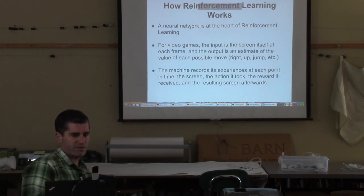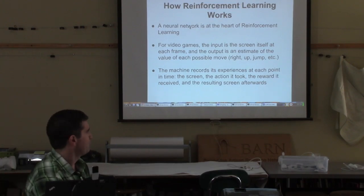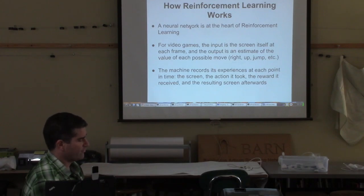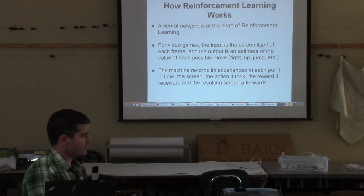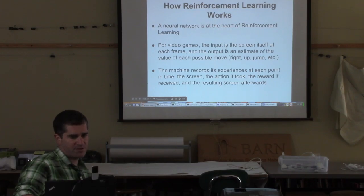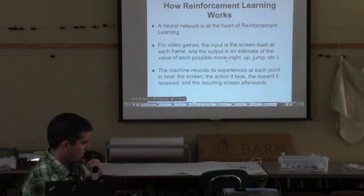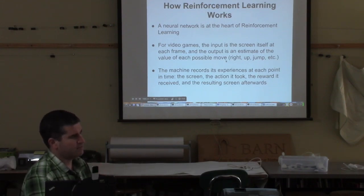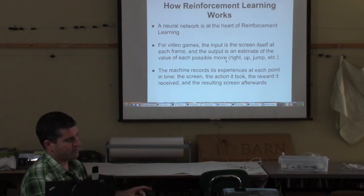When you get into reinforcement learning, the actual guts of it — there are a couple different flavors — but this is basically how it works. A neural network is at the heart of it, and the thing you're actually training and learning is the neural network. The input is just a screen — all the pixels of the screen — and the output is all your possible moves. In Super Mario Bros., you have 15 possible moves: up, down, left, right, A and B, and combinations of those.